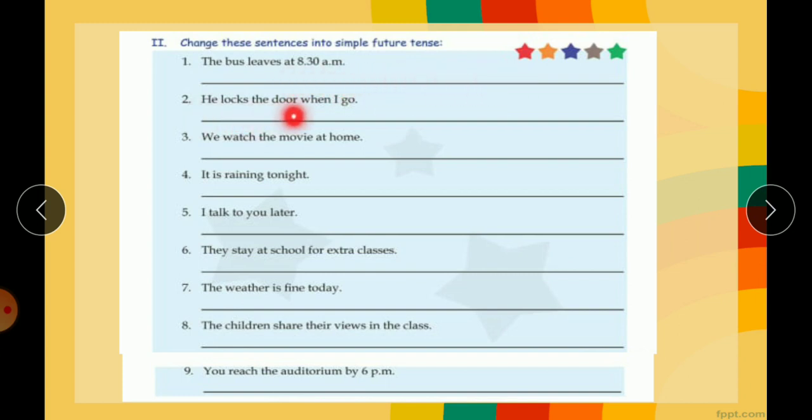He locks the door when I go. Now there are two verbs, locks and go. So locks will be changed to lock and you will write will lock. Go is already in first form but you will write will go. So he will lock the door when I will go.